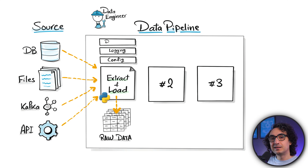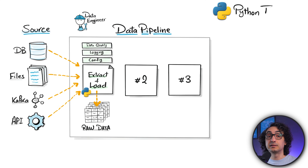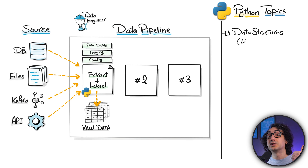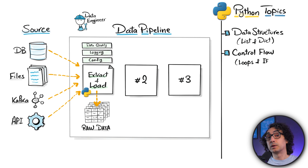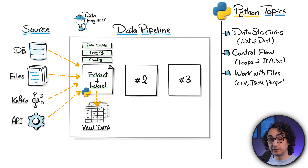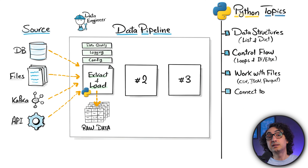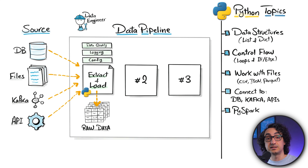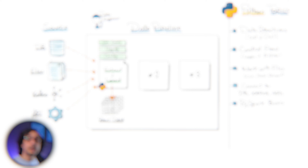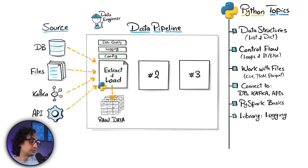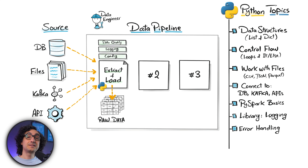Quick recap of Step 1 — Extract and Load: we build a main Python script with add-ons like configs, logging, and data quality. The Python concepts to learn are: data structures (especially dictionaries and lists), controlling flow with loops and conditional statements, working with files (read/write CSV, JSON, Parquet), connecting to databases, connecting to Kafka, Spark basics (start a session, put data in DataFrames), logging, and error handling with try/except.